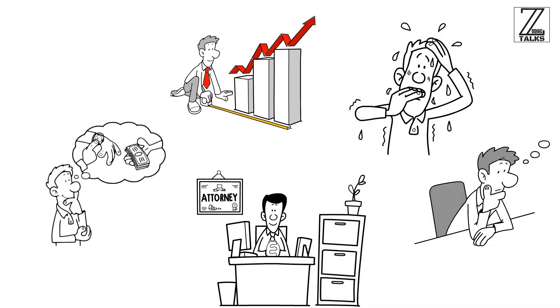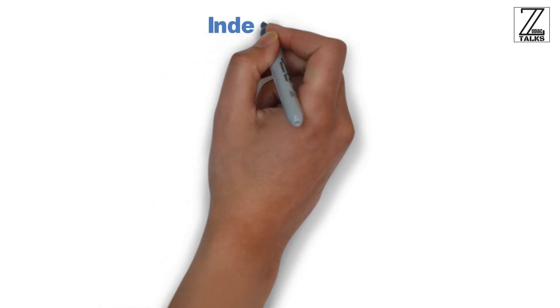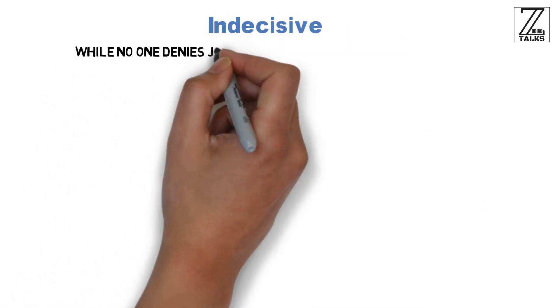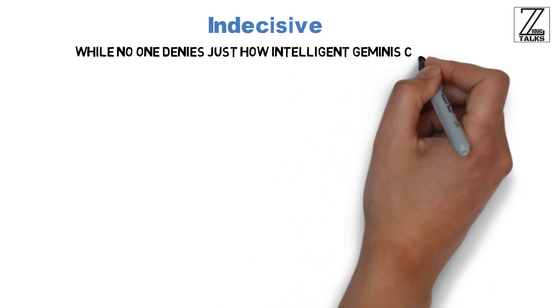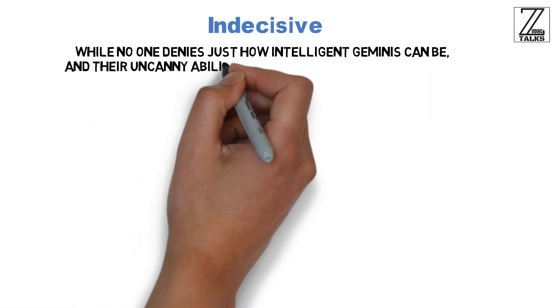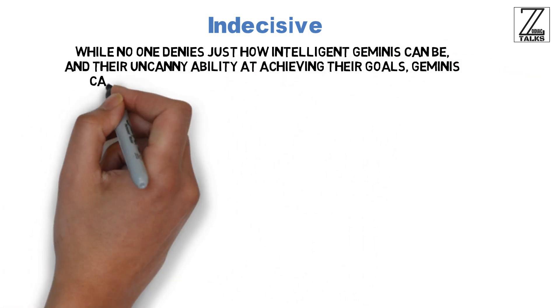Here are some of Gemini's weak points when it comes to love. Indecisive. While no one denies just how intelligent Geminis can be and their uncanny ability at achieving their goals, Geminis can be some of the most indecisive people out there.